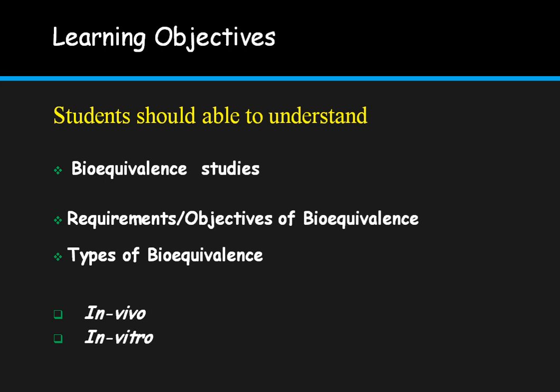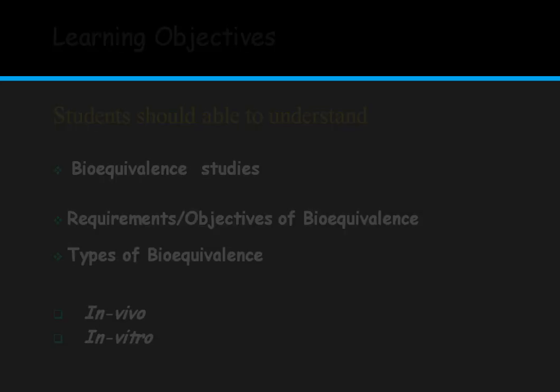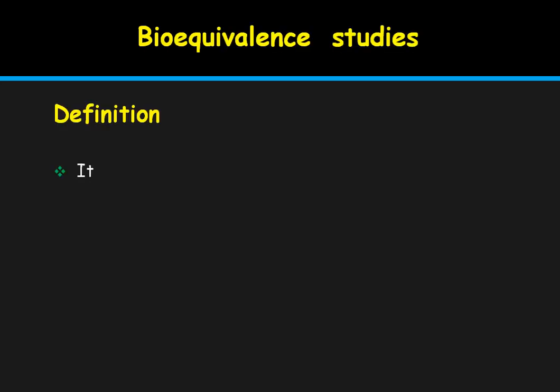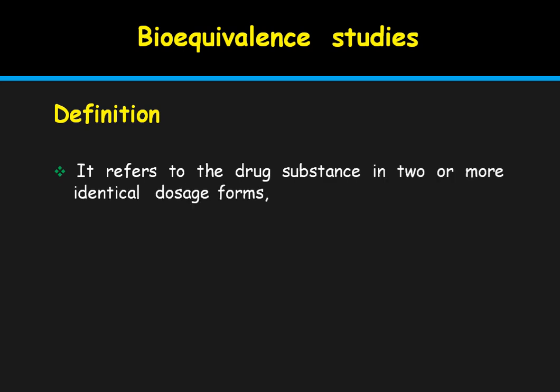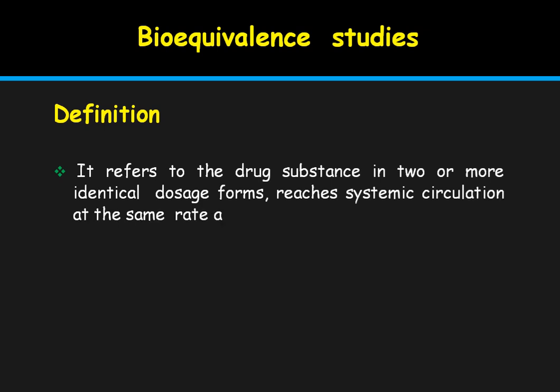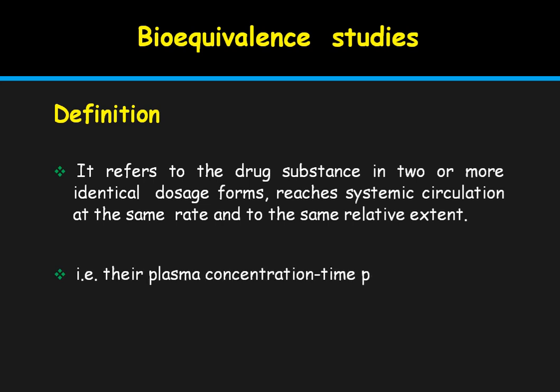Bioequivalence refers to a drug substance in two or more identical dosage forms that reaches systemic circulation at the same rate and to the same relative extent. We can say that two or more dosage forms are bioequivalent when the rate at which they reach systemic circulation is the same and to the same relative extent.